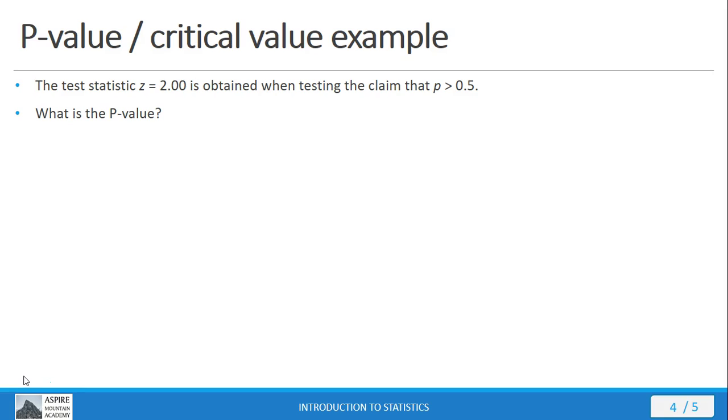So, let's look at an example. If we have a test statistic, z equals 2.00, and we get that when testing the claim that the proportion is greater than 50 percent, what is the p-value?